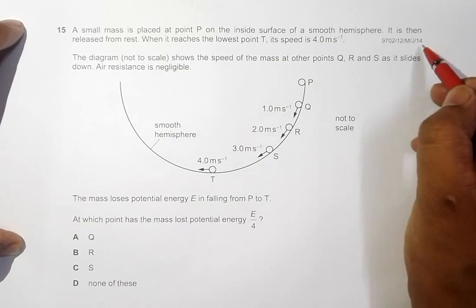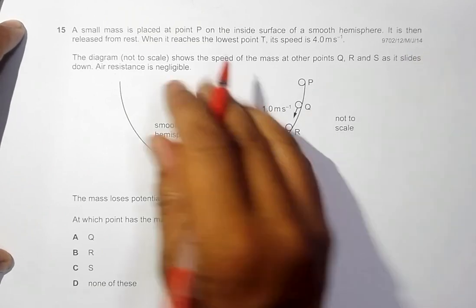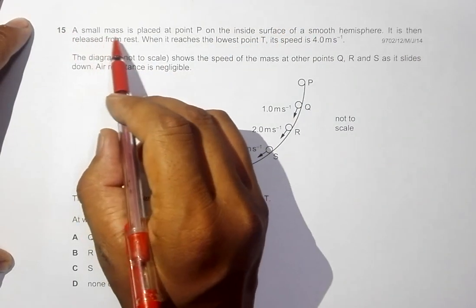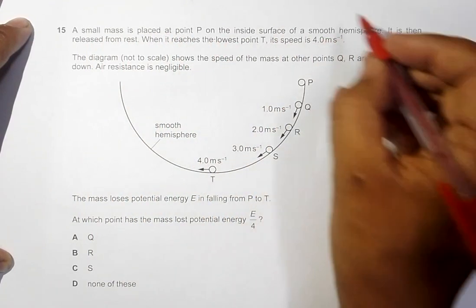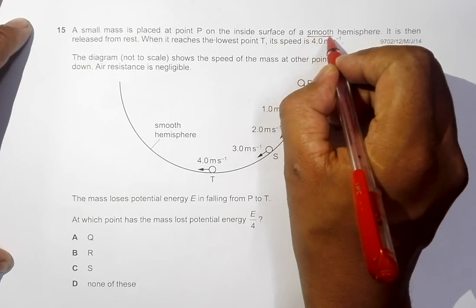This question belongs to paper 12 May June 2014, question number 15. It says that a small mass is placed at point P on the inside surface of a smooth hemisphere. Let's take care of this word smooth, which means there is no friction at all.